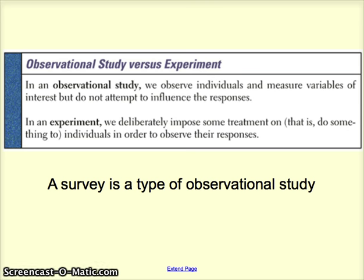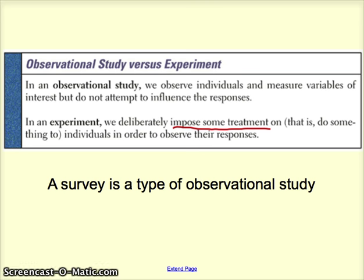In an observational study, we observe individuals and measure variables of interest, but we're not actively involved with trying to influence the responses — we're just watching and recording, or researching data that already exists. In an experiment, on the other hand, we are actively involved with the individuals in some way. The term of art is that we impose a treatment of some kind and see what sort of impact that has on the response variable we're measuring.